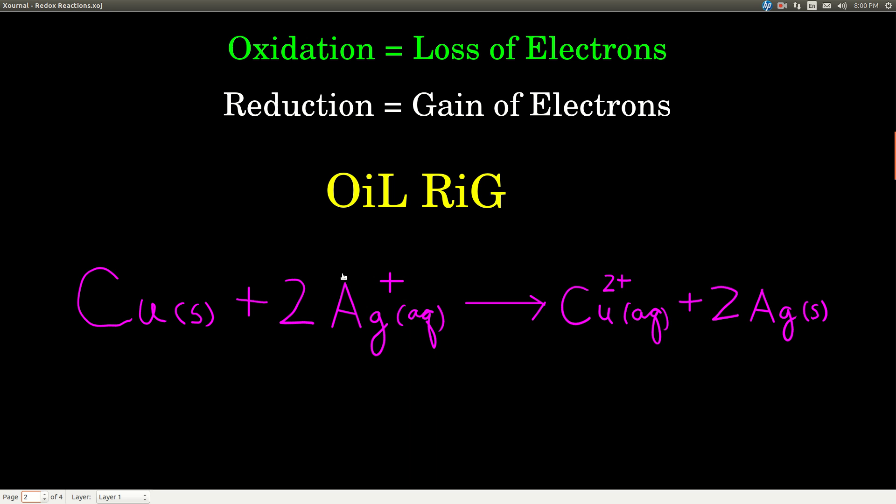So how do we know what's gaining electrons, what's losing electrons, what's oxidized, what's reduced? If we look at this chemical equation, we see that copper has no charge—it's elemental copper, just copper metal. But the silver has a positive charge, it's dissolved in water, it's aqueous. And on the right-hand side, now copper has gained a positive 2 charge and silver doesn't have any charge.